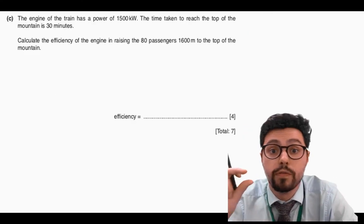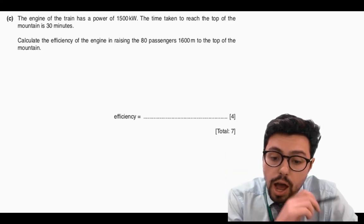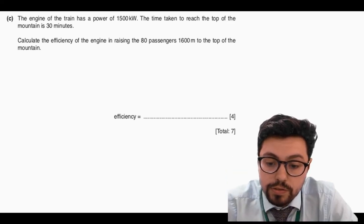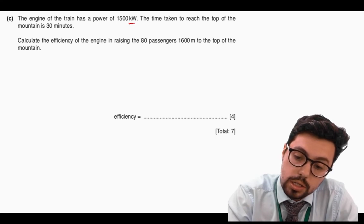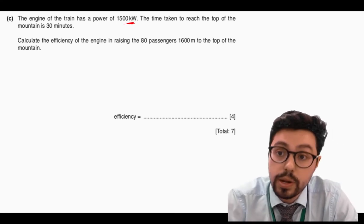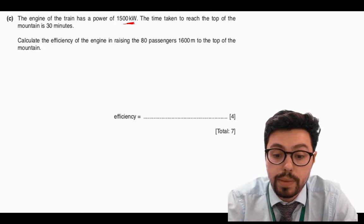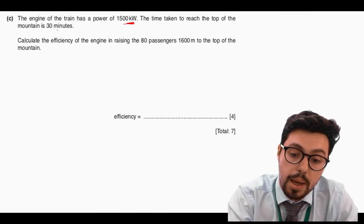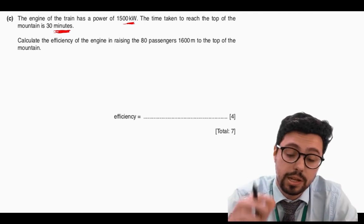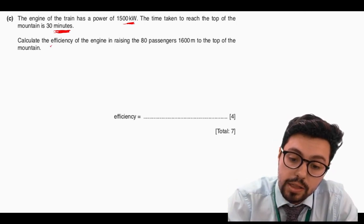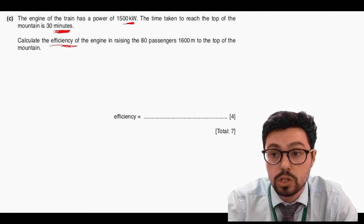Moving on to the last part of this question — this was the tricky part. An engine of the train has power 1500 kilowatts. You've got to make sure you spot that unit — it's kilowatts, not a normal watt. The time taken to the top of the mountain is 30 minutes — another thing to spot, it's in minutes not seconds. Calculate the efficiency of raising the 80 passengers to the top of the mountain.